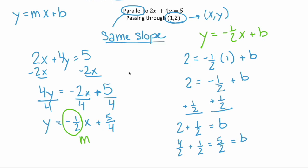So now that we have our b, we can substitute that in to our equation up here, where we know our slope. And we get a final answer of y equals negative 1 half x plus our b, which is now 5 halves.